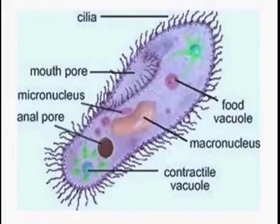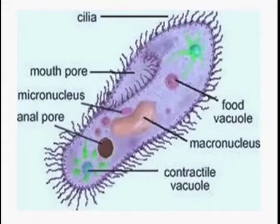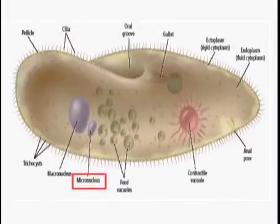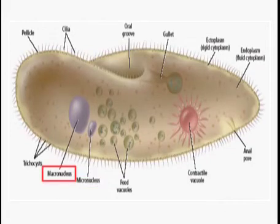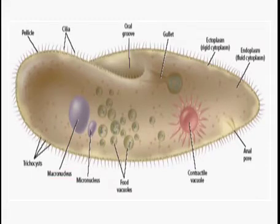In Paramecium the whole body is covered by cilia, so movement is brought about by these cilia. A difference between Amoeba, Euglena, and Paramecium is that Paramecium contains two nuclei: the micronucleus and the macronucleus. The micronucleus is reproductive in nature whereas the macronucleus is vegetative.